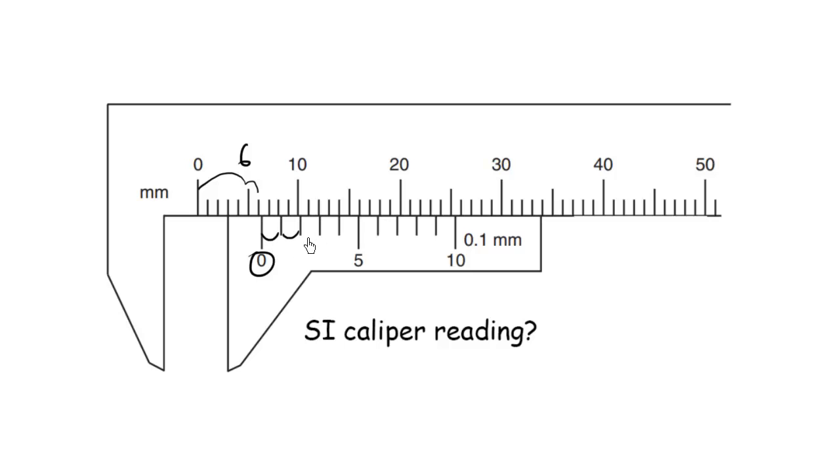One, two, it's getting better. Three, getting better. Four. This looks pretty good. Five is getting worse. Six is getting worse. Seven is getting worse. So I'm going to say six point four is the reading of this SI caliper. Let's try another one.